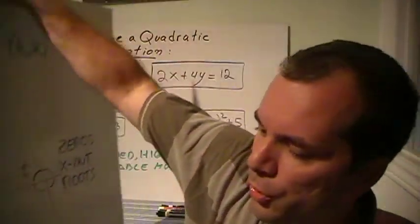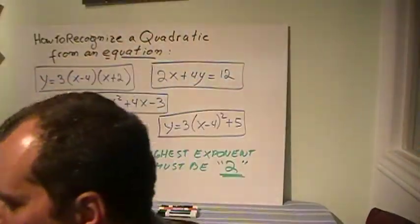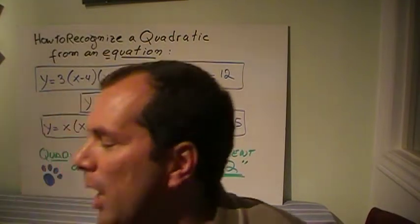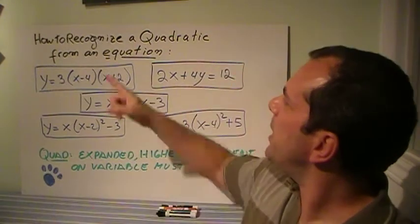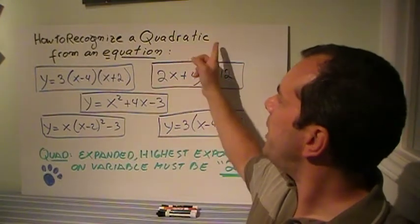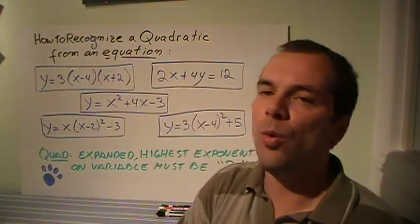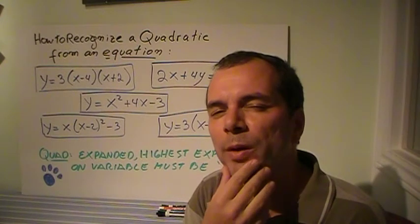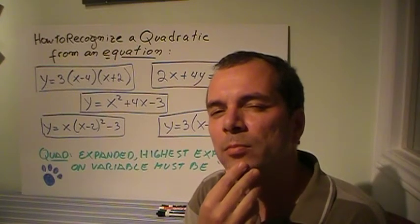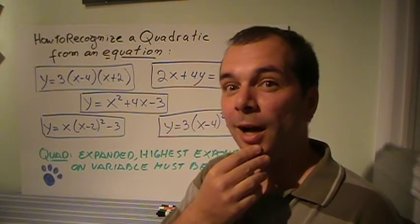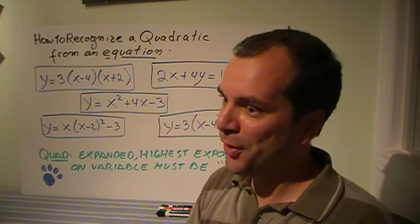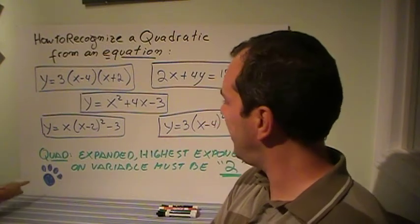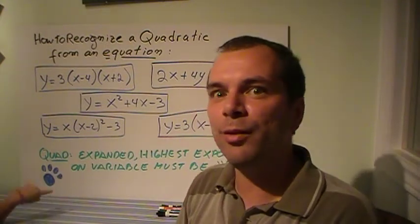How do we recognize a quadratic or a parabola from an equation? How do we recognize it? There's a clue — where's the clue? There's the clue.